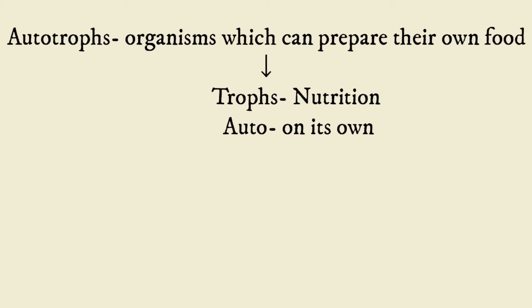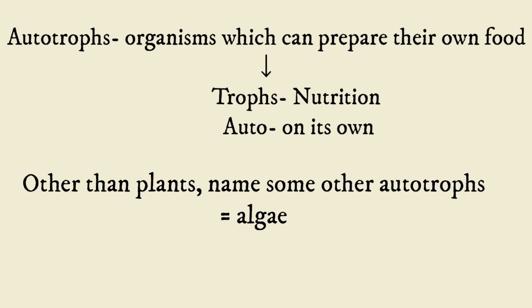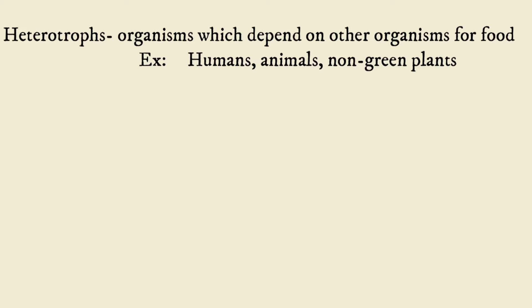Autotrophs: the organisms which can prepare their own food are called autotrophs. 'Trophs' means nutrition and 'auto' means on its own. Other than plants, algae can also prepare its own food, so it is also an example of an autotroph.